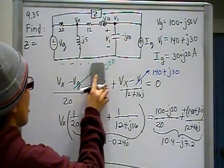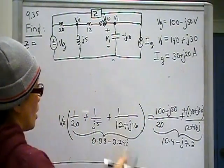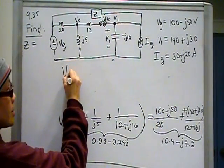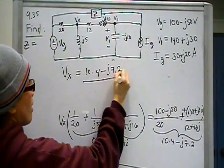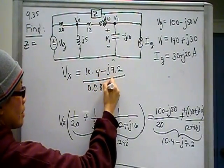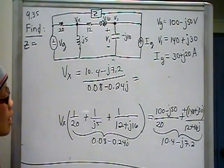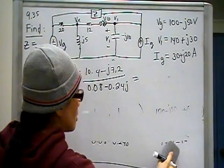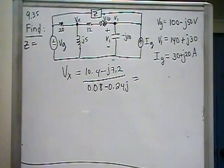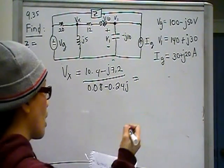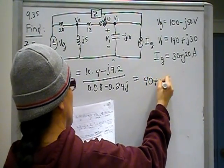Great. So now we are at this point. We're here. We have v sub x is equal to 10.4 minus j7.2 over 0.08 minus 0.24j. Make sure you have your parentheses. If you're making a mistake, chances are you have some kind of parentheses error on your calculator.